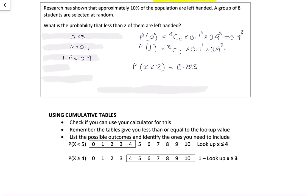An important tip: if you want P(X < 5), look up P(X ≤ 4). If you want P(X ≥ 4), calculate 1 − P(X ≤ 3). Check your exam board and know how to use your calculator or tables for cumulative binomial probabilities.